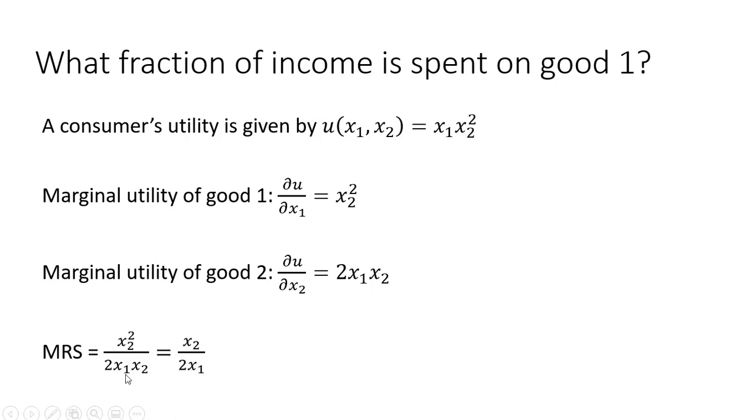We're going to set up the marginal rate of substitution, which is the marginal utility of good 1 divided by the marginal utility of good 2. Simplifying, we have x₂² divided by 2x₁x₂, which leaves us with x₂/(2x₁).